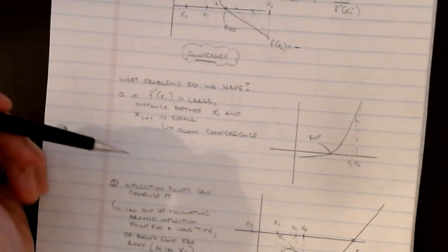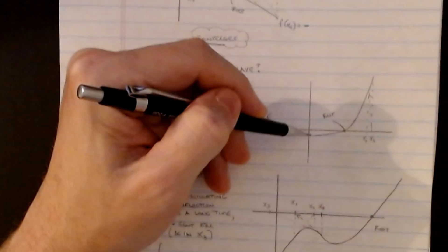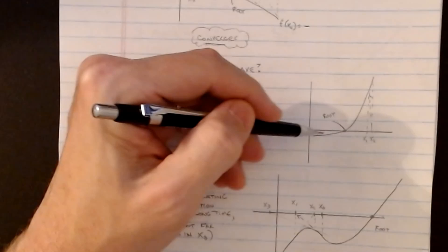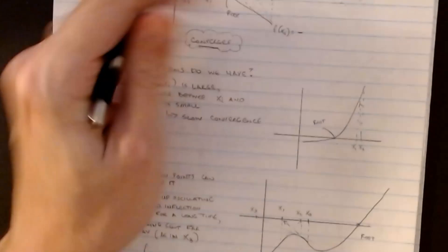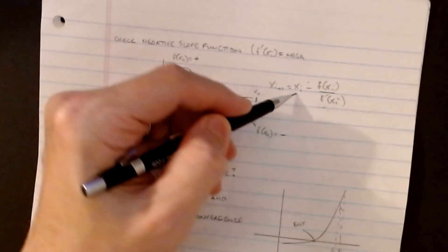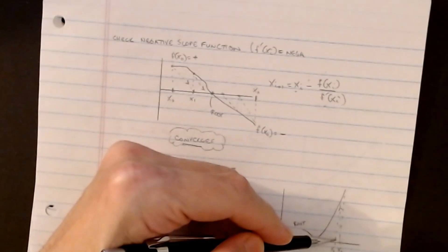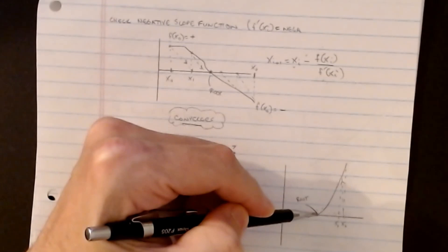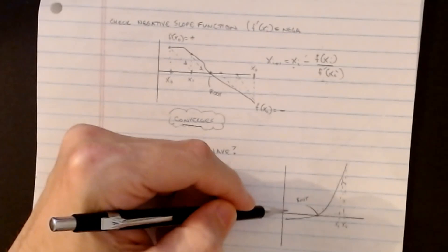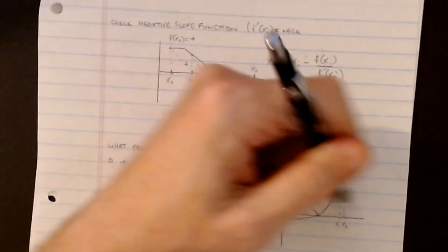In our bracketing method, we talked about slow convergence with very flat slopes. With Newton-Raphson, if f'(x) is really, really large at your guess — a very steep slope — your next guess won't be very far away, and convergence will be slow. Conversely, on a very flat slope, even a close initial guess could throw you far away — further away than when you started. So very large slopes or very small values of x_i both create issues.